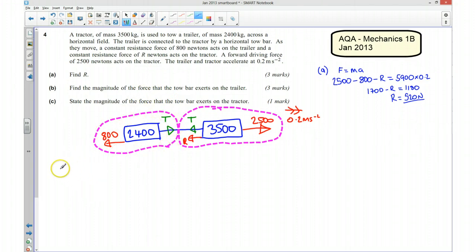On the trailer, we're going to do Newton's second law, which is force equals mass times acceleration. In the direction of motion, I've got my T, which is my tension, and against that I've got my resistance. That there is going to be my net force, and that's going to be equal to mass times acceleration, which is 2,400 times by 0.2.